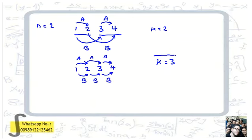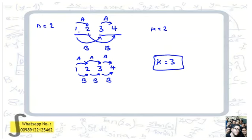In this problem the answer is 3 for n equals 2. We see that we divide n squared — that is 2 squared — stations into 2 pairs, or segments, and in each segment we have n, that is 2, altitudes or stations.